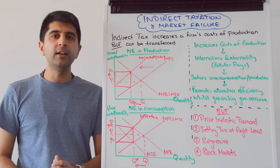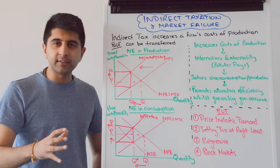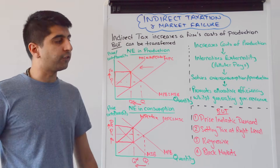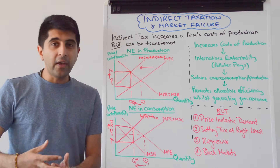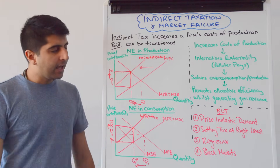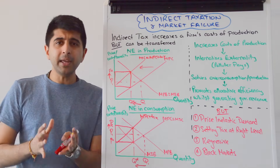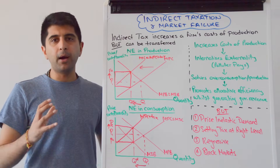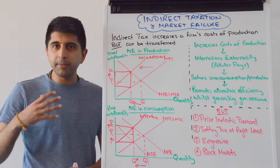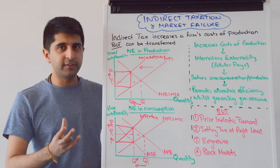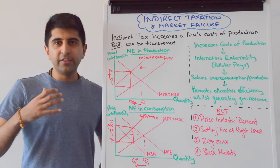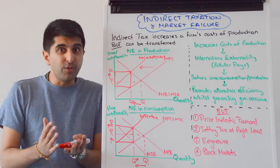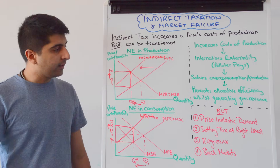One more point: indirect taxation is quite paternalistic. It's governments forcing us to do what they want — saying there is a problem and that we have to pay higher prices because they know best. The problem with that is it impinges on individual freedom, liberty, and choice. That's a big issue, especially if we don't agree that the market failure is that significant. We might not use that argument much for cigarettes and alcohol where the market failure is quite substantial, but for other kinds of market failures it might be worth talking about — an indirect tax being paternalistic and nannying society, impinging on freedom and choice.